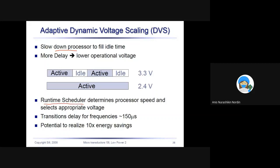If you slow the processor or slow the frequency on the ones that are idle, you can save power. This is what your computer has: a runtime scheduler that determines the processor speed and selects the appropriate voltage. The transition delay for frequency, and you can reduce your energy by 10 times by doing this method.